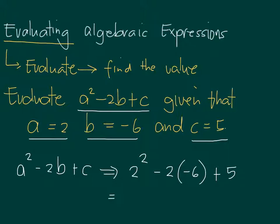Then we compute the value. 2 squared is 4. Minus 2 times negative 6 is positive 12, so we have plus 12, and then plus 5. So 4 plus 12 is 16, plus 5 is 21.